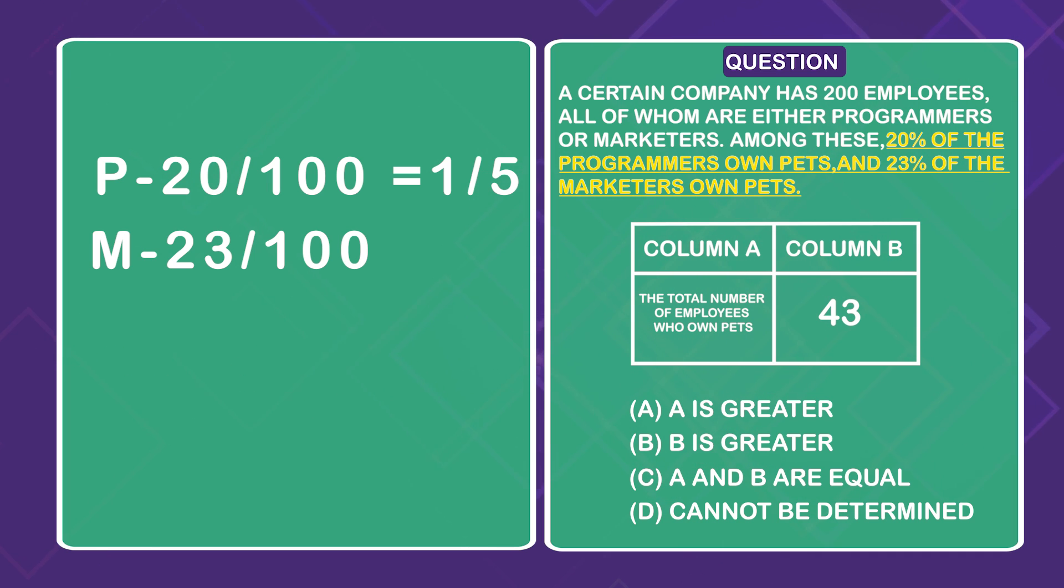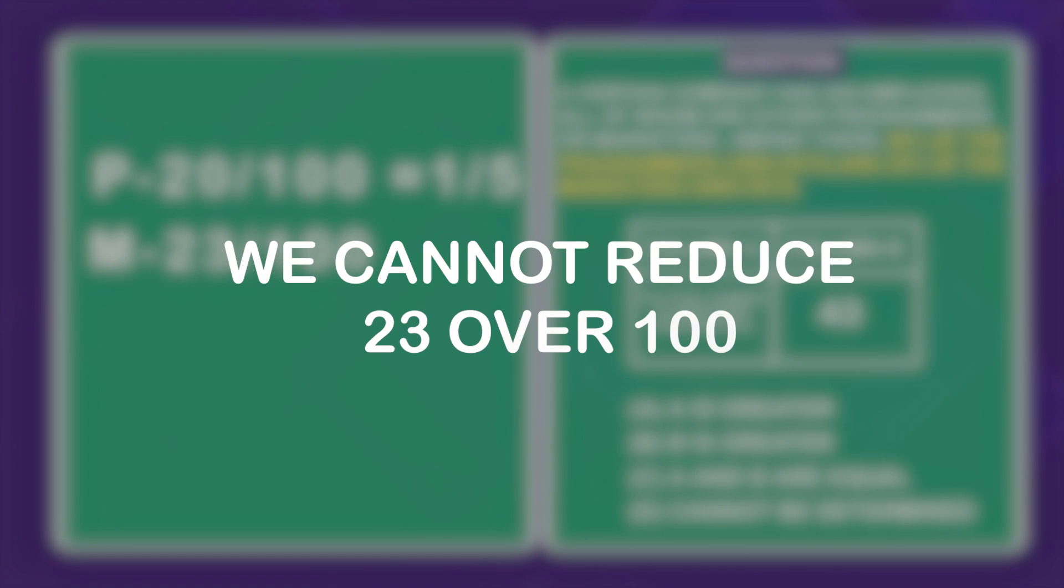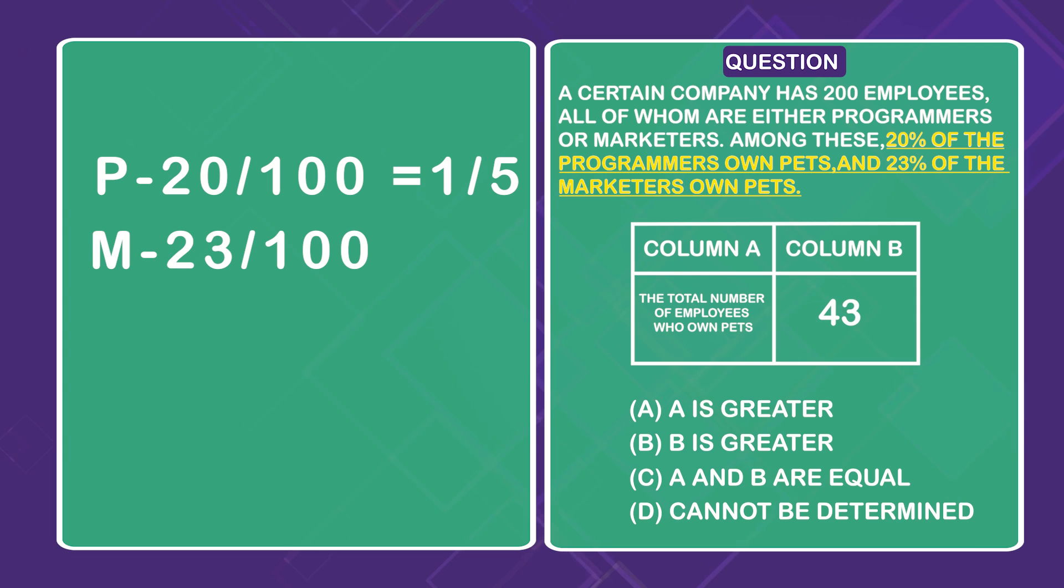However, 23 is a prime number, meaning we cannot reduce 23 over 100 any further to any other fraction. This means that 23 out of every 100 marketers owns pets.